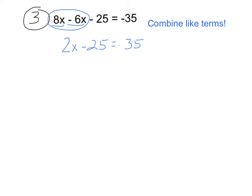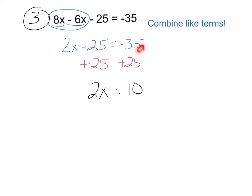Next step: get rid of minus 25 by adding 25 to both sides. That gives us 2x equals negative 35 plus 25. Just because it says plus does not mean you add — negative and positive are different signs, so we subtract: 35 minus 25 is 10, and because we have more negatives, the answer is negative 10. Divide both sides by 2: x equals negative 5.